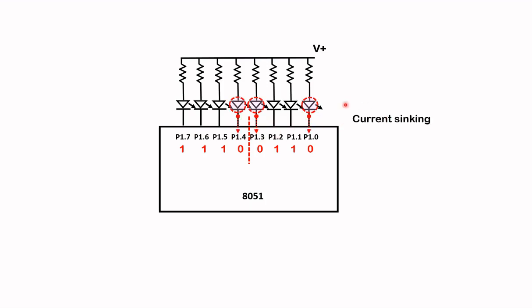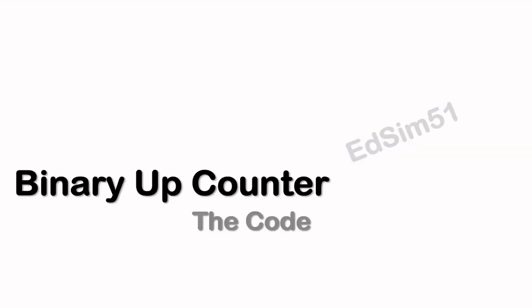As you can see, current flows from high potential to low potential, so the LEDs connected to P1.0, P1.3, and P1.4 will be switched on. Before we move on, let's translate this into hex code. The hex code for this binary pattern is E6.